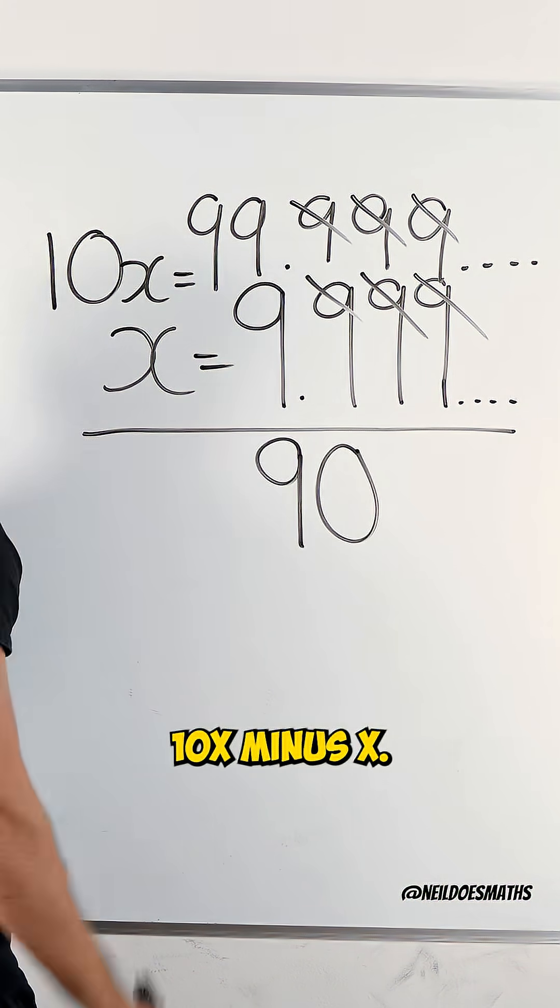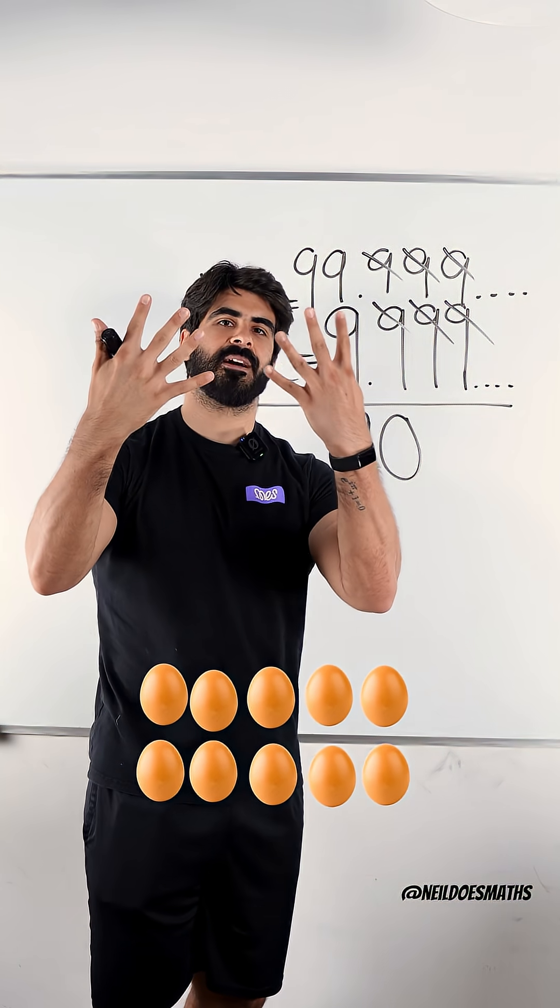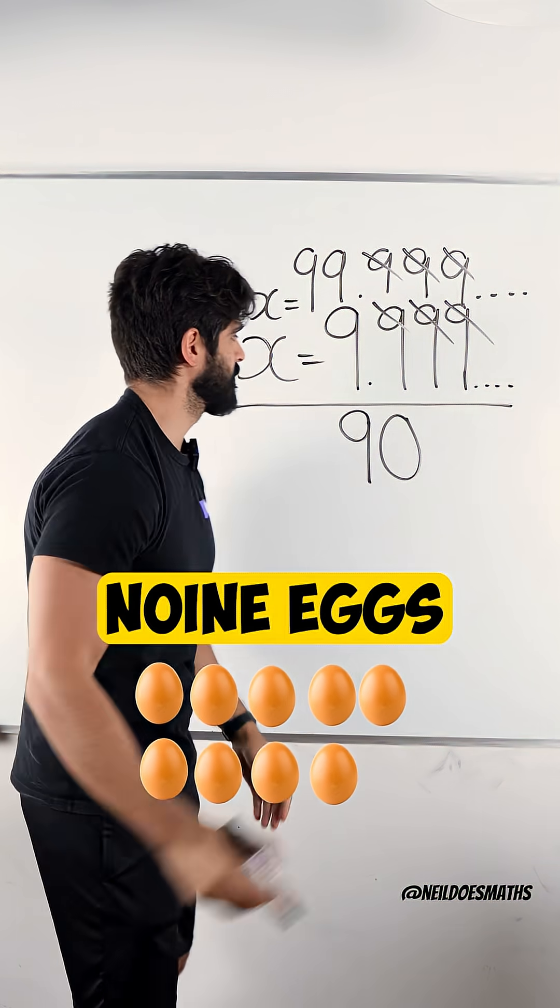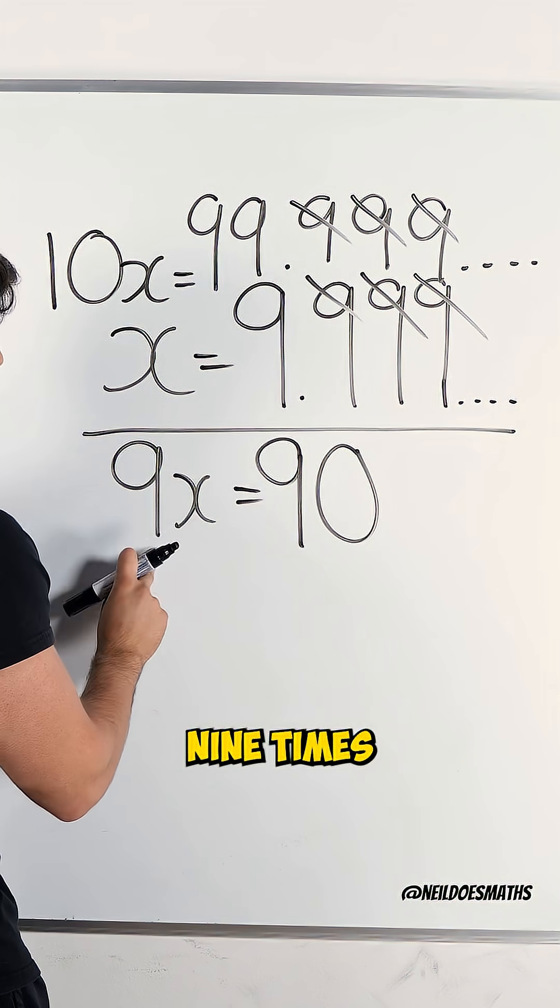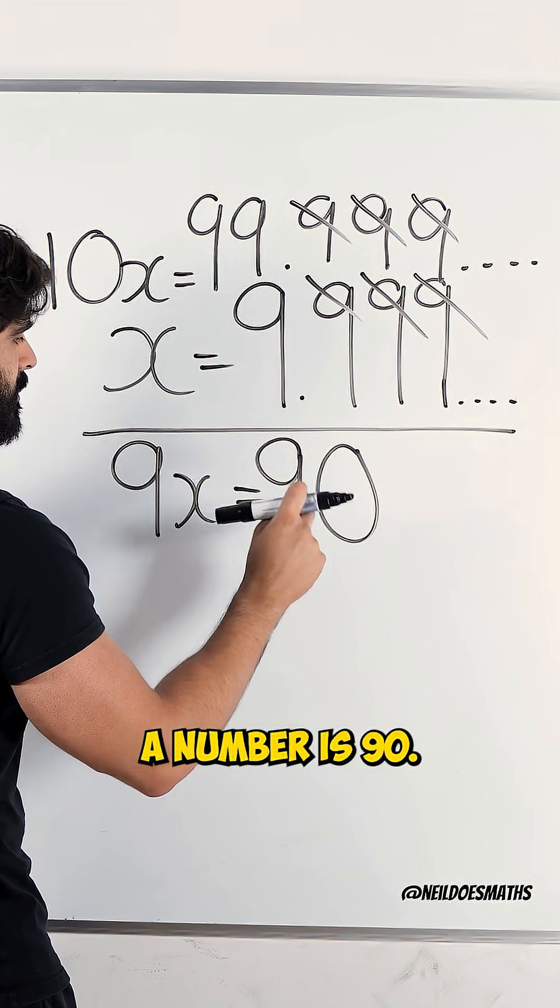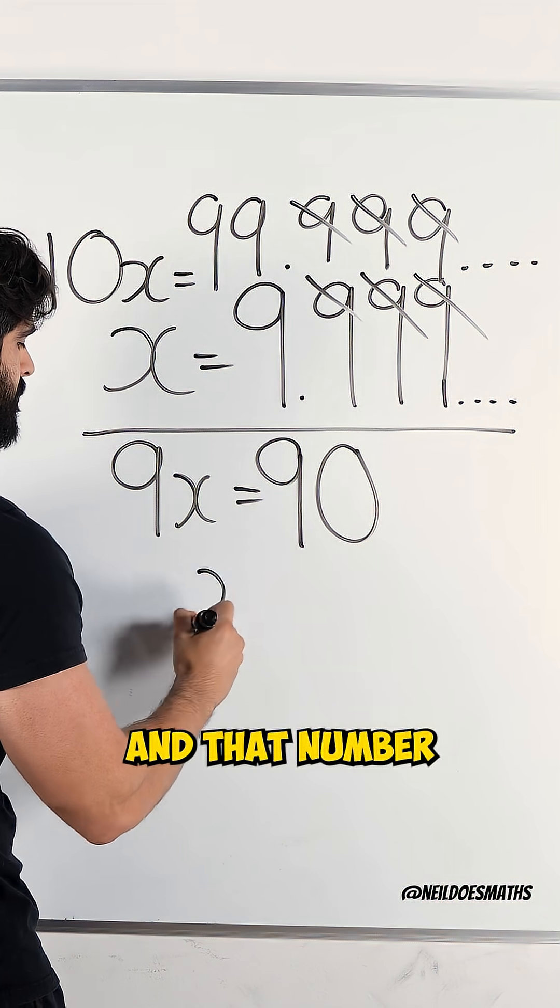10x minus x. If you have 10 eggs and you minus an egg, you have 9 eggs. This basically says 9 times the number is 90, and that number is 10.